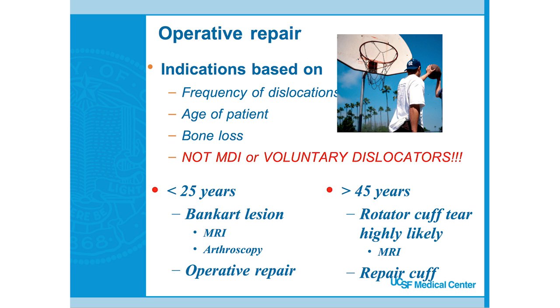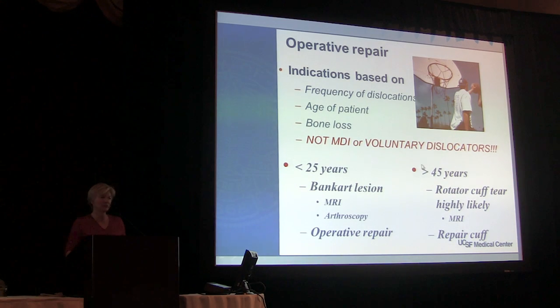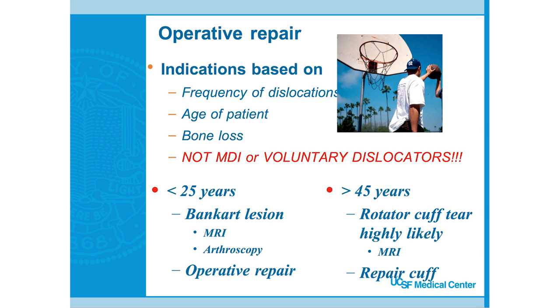For recurrent dislocations, we may consider surgical repair if non-operative treatment fails. In older patients who dislocate their shoulder in a fall, get an MRI — we don't always do this for younger first-time dislocators, but in older patients the likelihood of an associated rotator cuff tear is quite high, and they do well if we fix that acutely.